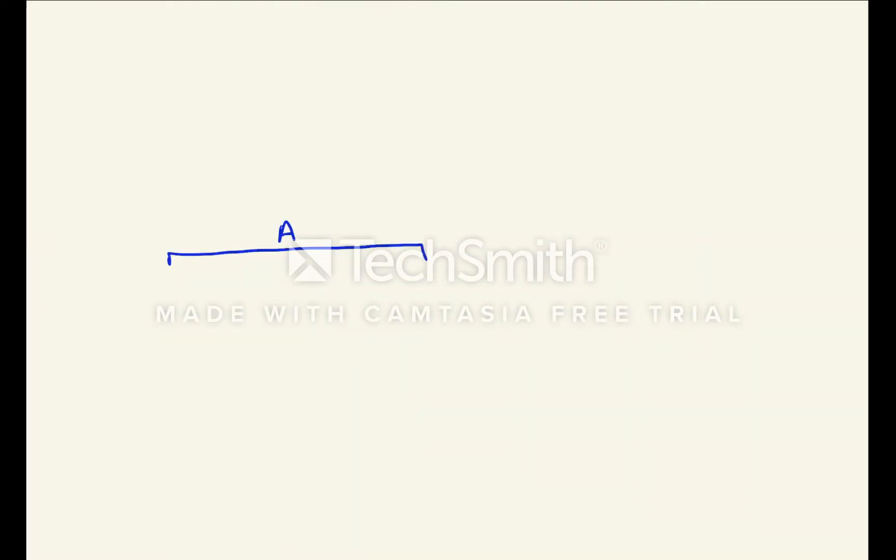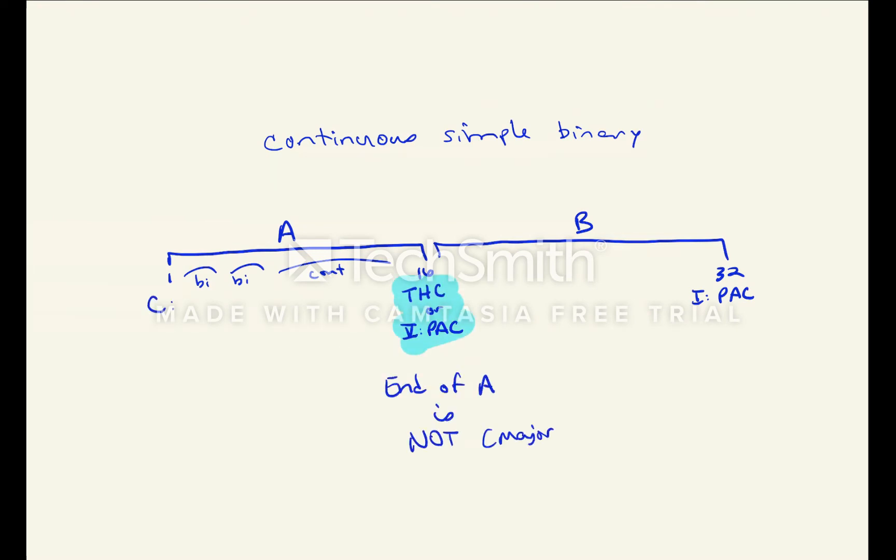To recap, this piece is a continuous, simple binary form. It contains an A section, which is a sentence ending on 5, making it continuous. And the B section does NOT feature a return to the opening melody.